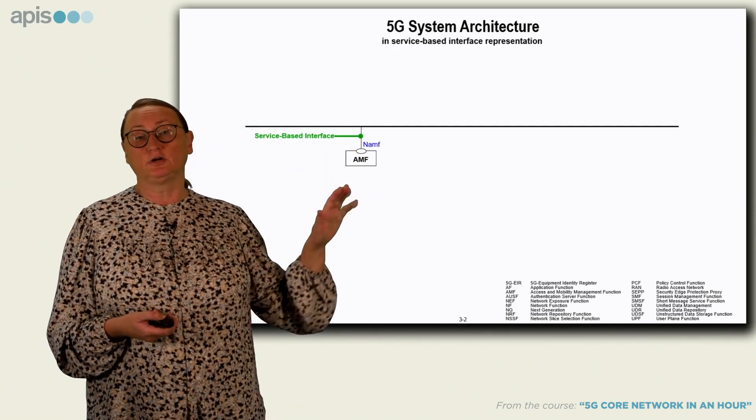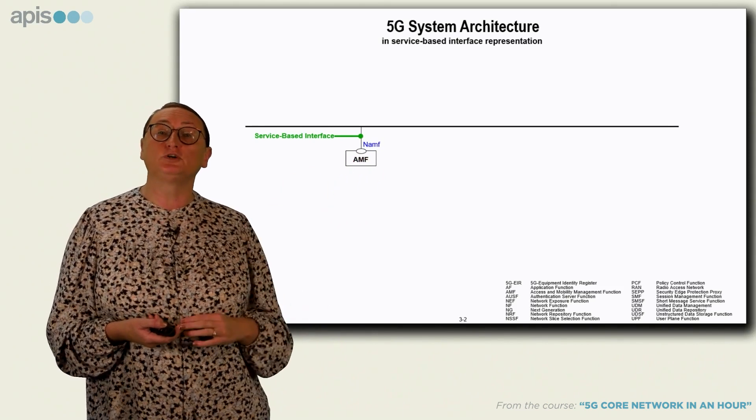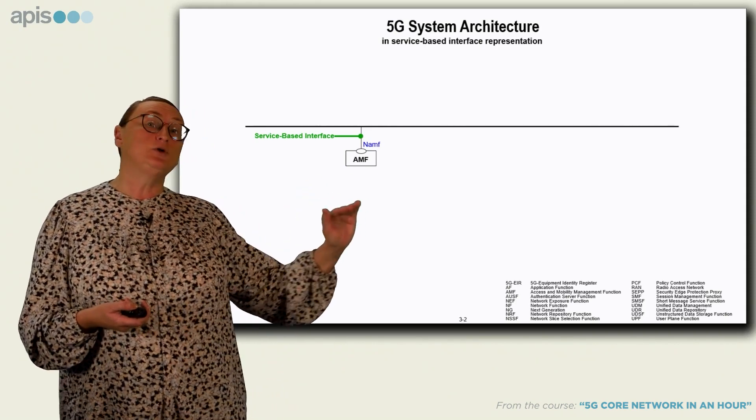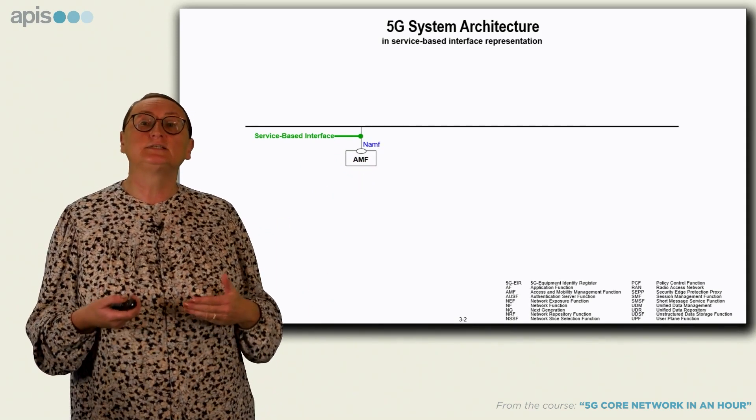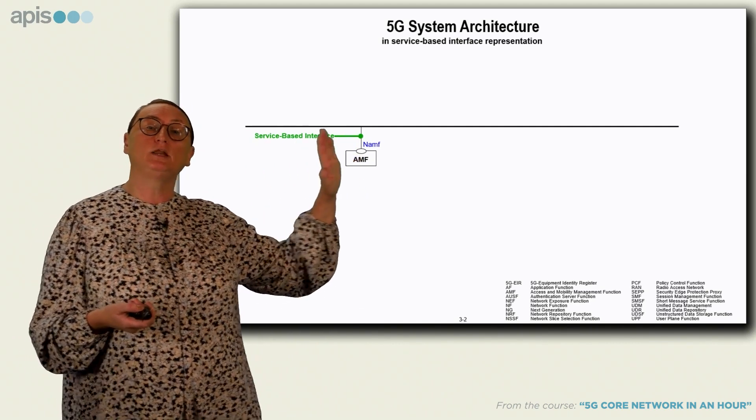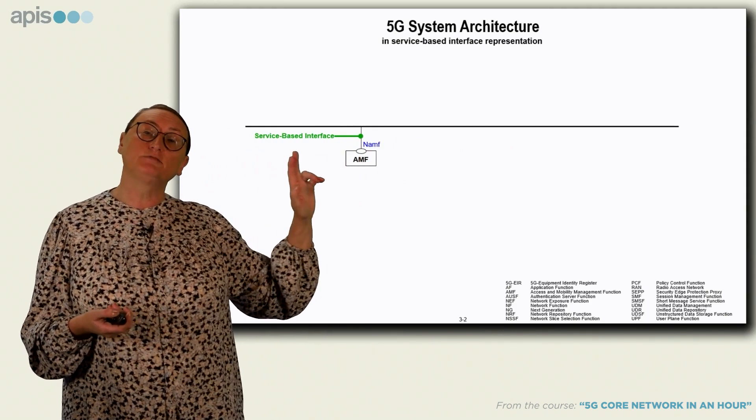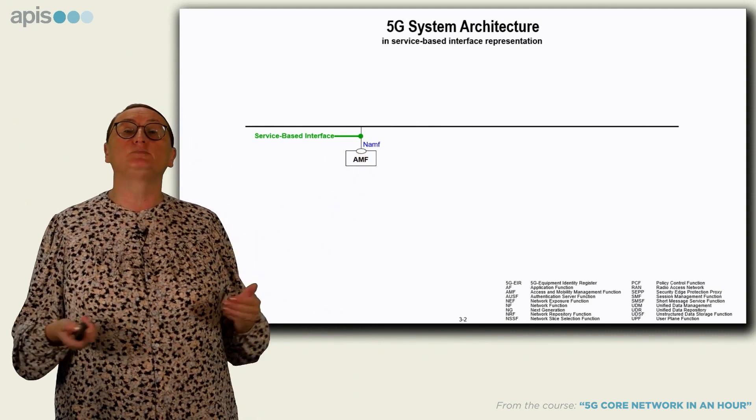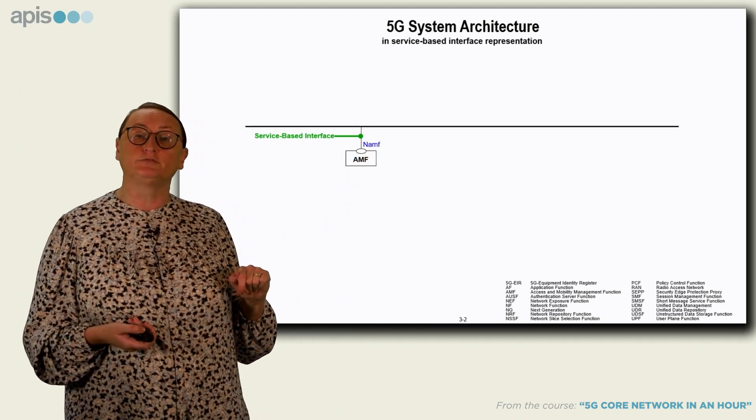So, for example, this one over here, this is the access and mobility management function, is responsible for UE's access and for managing the mobility of a UE. Now, in order to manage the UE, this network function offers certain services. These services are opened to anybody that is on this communication bus over here, over a service-based interface, which is called this capital letter N, is the reference point in the 5G Core. And then you can see the name of the network function that offers the services.